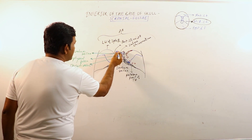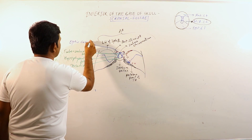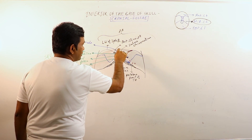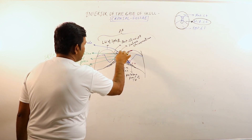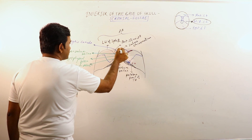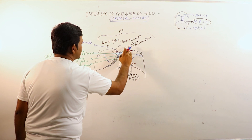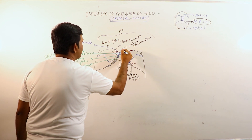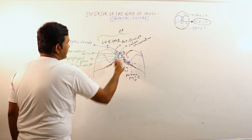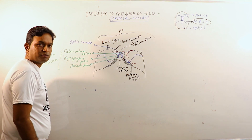These are the optic canals. The optic canals are bounded superiorly by the lesser wings of the sphenoid and medially by the body of the sphenoid. The median area thus includes the optic canals, sulcus chiasmaticus, tuberculum sellae, hypophysial fossa, and the dorsum sellae.